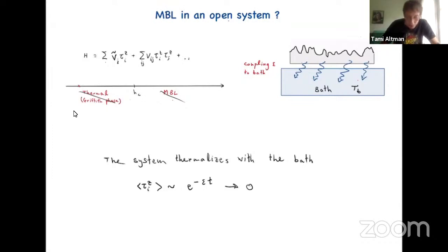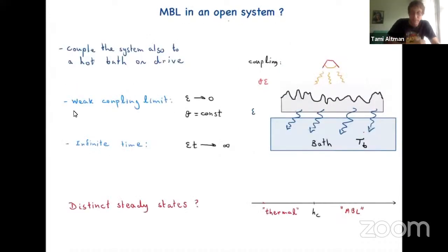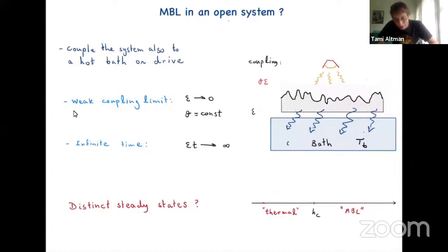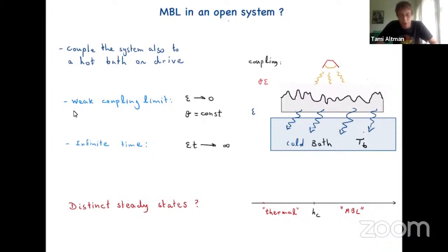So why am I talking about this at all if there is no MBL? Consider the following scenario. Instead of coupling to a bath, I'm going to take a special limit. On the one hand, I'll couple my system to a bath at coupling epsilon, which means decay rate epsilon and the time to thermalize with the bath is one over epsilon. But at the same time, I'll couple it to another bath — one bath as a cold bath and another as a hot bath. Driving with light is like coupling to an infinite temperature bath. This second coupling is proportional to theta times epsilon, where theta is a constant.